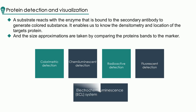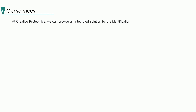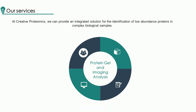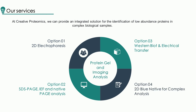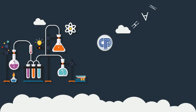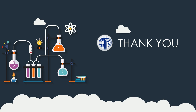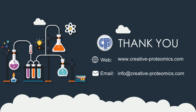The electrochemiluminescence system is the most common detection method. At Creative Proteomics, we can provide an integrated solution for the identification of low-abundance proteins and complex biological samples. We can provide two-dimensional electrophoresis, SDS-PAGE, IEF and native PAGE analysis, Western blot and electrotransfer service, as well as 2D blue native for complex analysis. If you have any questions or specific requirements, please do not hesitate to contact us. We are very glad to cooperate with you.